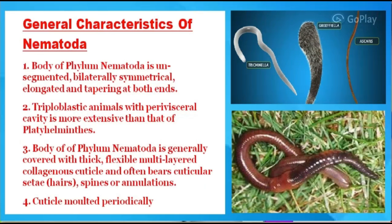Now we will discuss the general characteristics of phylum Nematoda. First, the body is unsegmented, bilaterally symmetrical, elongated, and tapering at both ends. Second, they are triploblastic animals with a body cavity more exterior than that of phylum Platyhelminthes. The body is generally covered with a thick, flexible, multi-layered collagenous cuticle, often bearing spines.